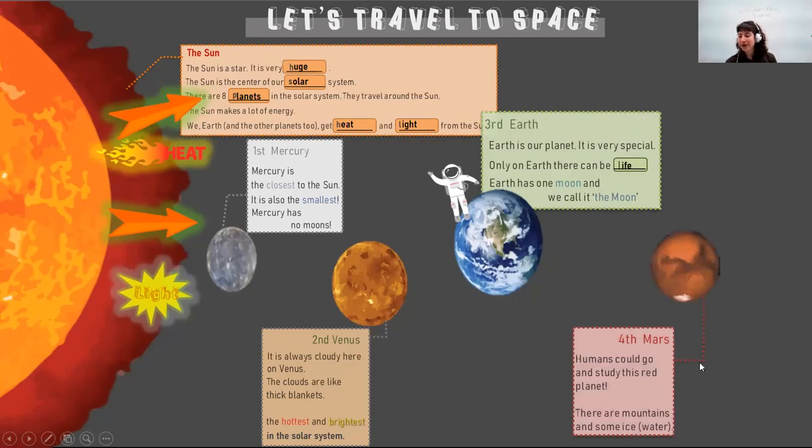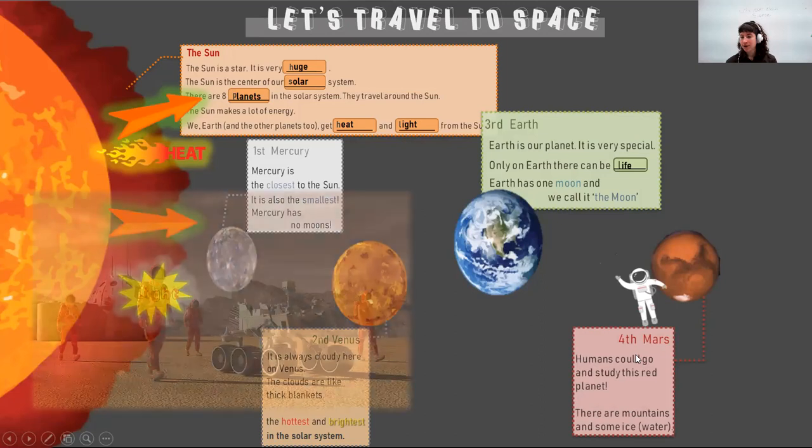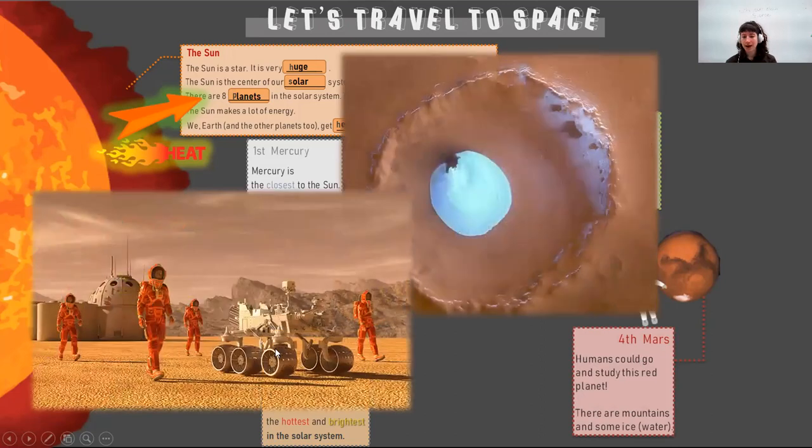Our number four is Mars. And there have been humans that can go to this red planet. And there are some mountains there. And they even found some ice, which means there is water on Mars. So have you seen the movie Interstellar? There is a movie about being on Mars.